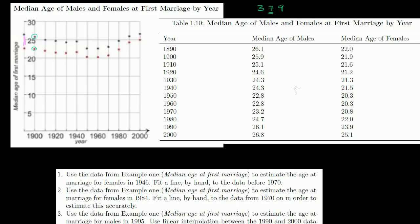This is the actual data from that chart. In 1900, the median age of males getting married was 25.9, and the median age of women getting married was 21.9. This is just a scatter plot of that data — we've plotted each of these points, these in blue and these in red. Now let's do the questions.